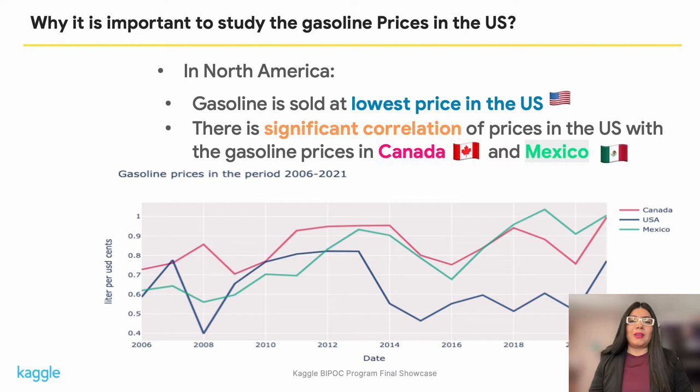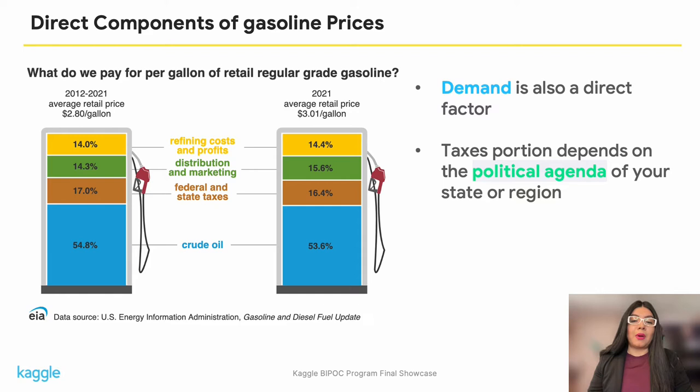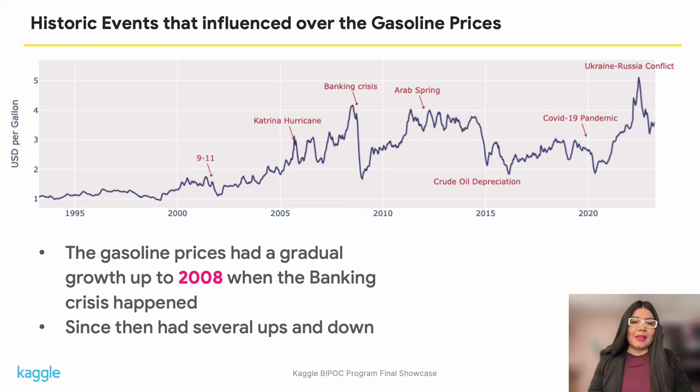Why is it important to study gasoline prices in the U.S.? In North America, gasoline is cheapest in the U.S., so if prices go up there, they also rise in Canada and Mexico. Crude oil makes up more than half the price of gasoline, while the other components are almost equally distributed. Demand is also an important component of gasoline prices.